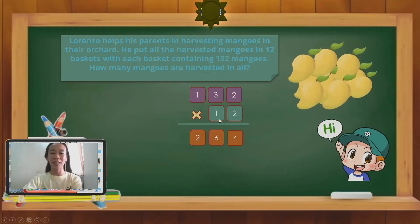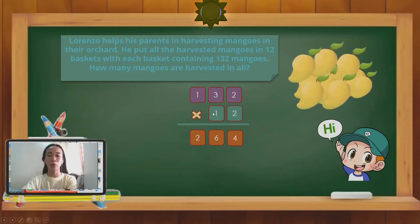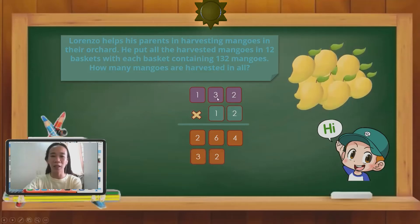1 is in the 10th place value. So that will be 10 times 132. What we are going to do next is to multiply 1 times 132. And the number 1 should be aligned on the 10th place value. So that will be 1 times 2, 2. 1 times 3, 3. And then 1 times 1, 1.